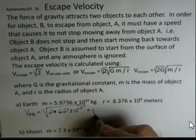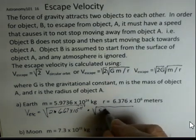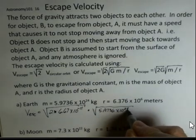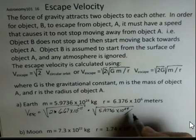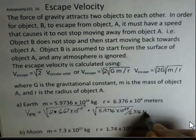Then I have to multiply by the square root of the mass of the Earth, 5.9736 times 10 to the 24th, divided by the radius of the Earth, assuming the Earth is a sphere, 6.376 times 10 to the 6 meters.